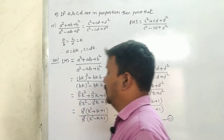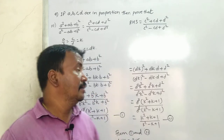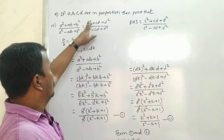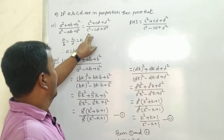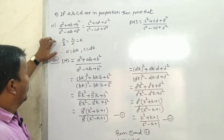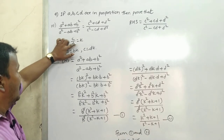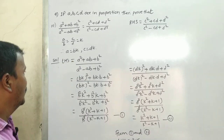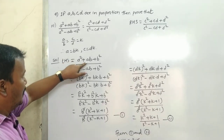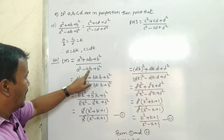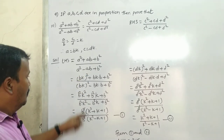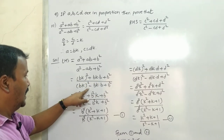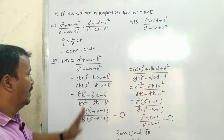Third part: prove that (a² + ab + b²) / (a² - ab + b²) = (c² + cd + d²) / (c² - cd + d²). We know a/b = c/d = k, so a = bk and c = dk. LHS: (a² + ab + b²) / (a² - ab + b²) becomes [(bk)² + (bk)·b + b²] / [(bk)² - (bk)·b + b²].